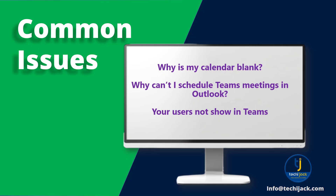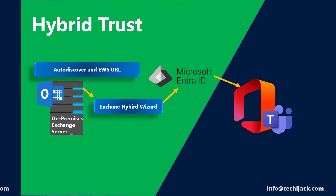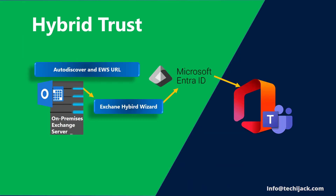UPN is basically a user principal name in the form of an email address. Remember that to make Teams work with Exchange on-premises, you are not just connecting two systems — you are creating a hybrid trust between them with Entra ID, hybrid modern authentication, and published endpoint services so that Teams can access your calendar from on-premises Exchange itself.